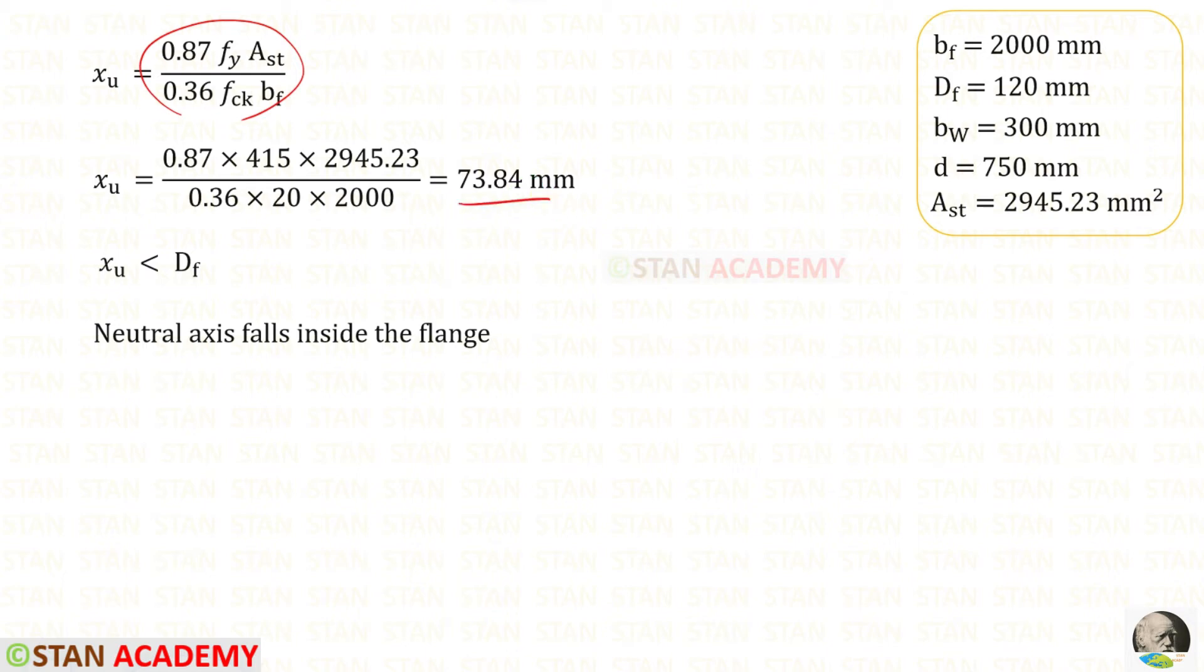The depth of the flange is 120 millimeter. So the depth of the flange is greater than XU. In this case our assumption is correct. The neutral axis falls inside the flange.